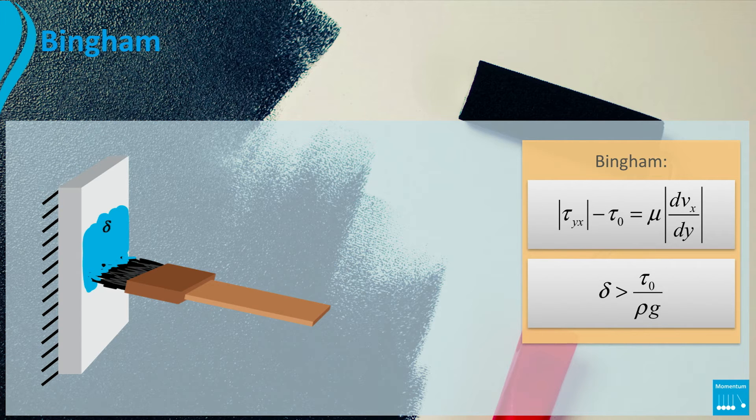Can we predict the critical thickness of the paint layer? Roughly you can say that the gravity force acting on the surface should be higher than the yield stress keeping the paint on the wall. So if the thickness is larger than tau0 divided by the product of the density and the gravity, then the paint starts to drip along your wall. So don't make the layer too thick.